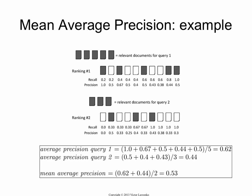For query 2, you do the same thing and get 0.44. The way you construct MAP — mean average precision — is you take the average precision for query 1, the average precision for query 2, and you average them, and that is your MAP. By the way, that is the number you used in coursework 1 — that is what TrecEval was computing for you, and that is what you were using to decide which algorithm is better.